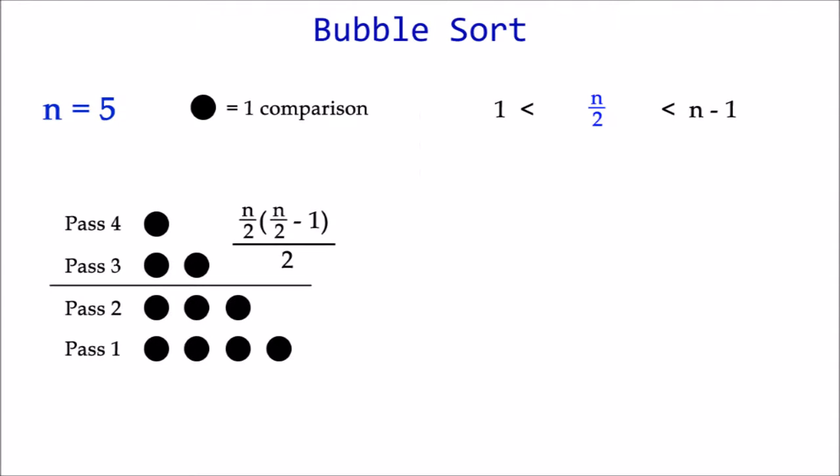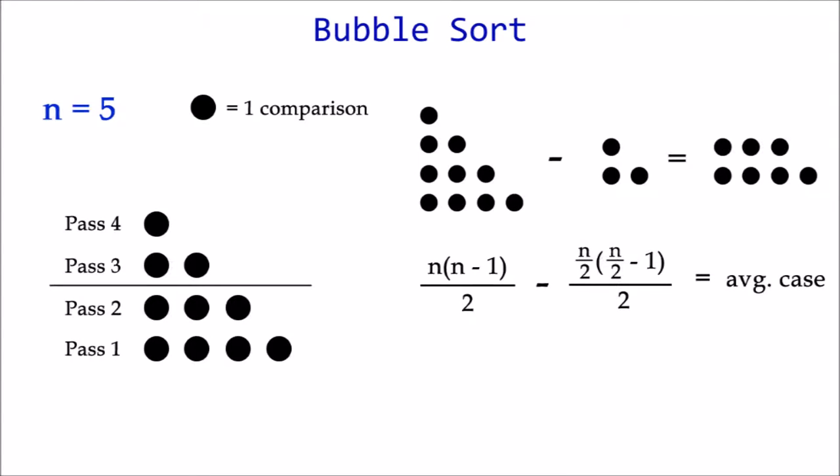We now have everything we need. Here is the final equation for finding the average number of comparisons. And written in polynomial form, we get something like this. The average case still ends up being Big O of n squared because it's the highest order term.